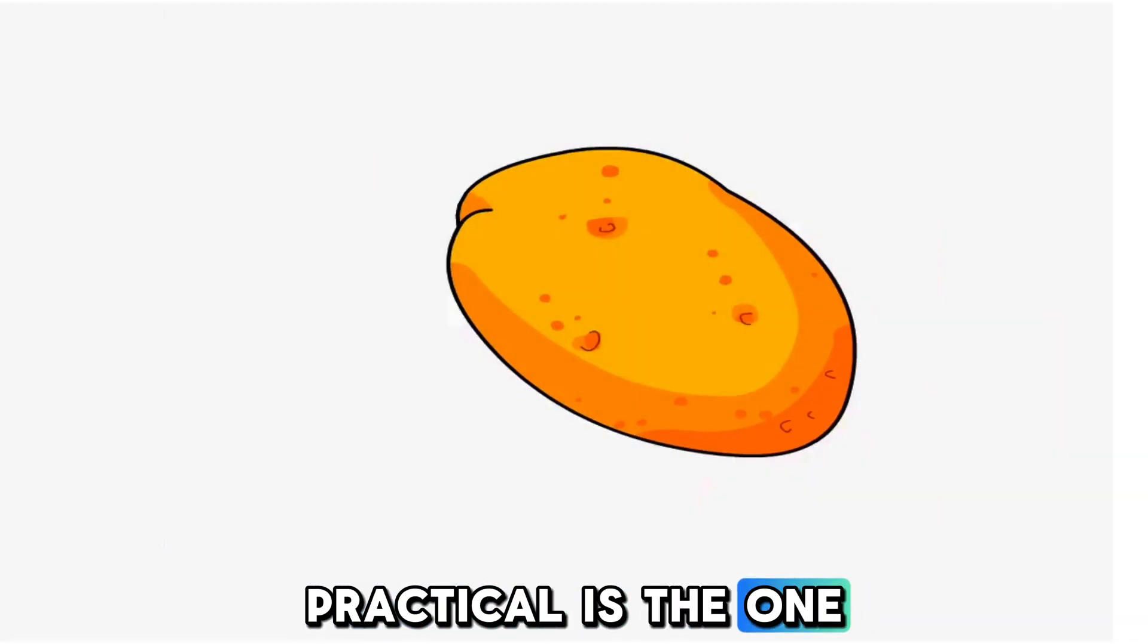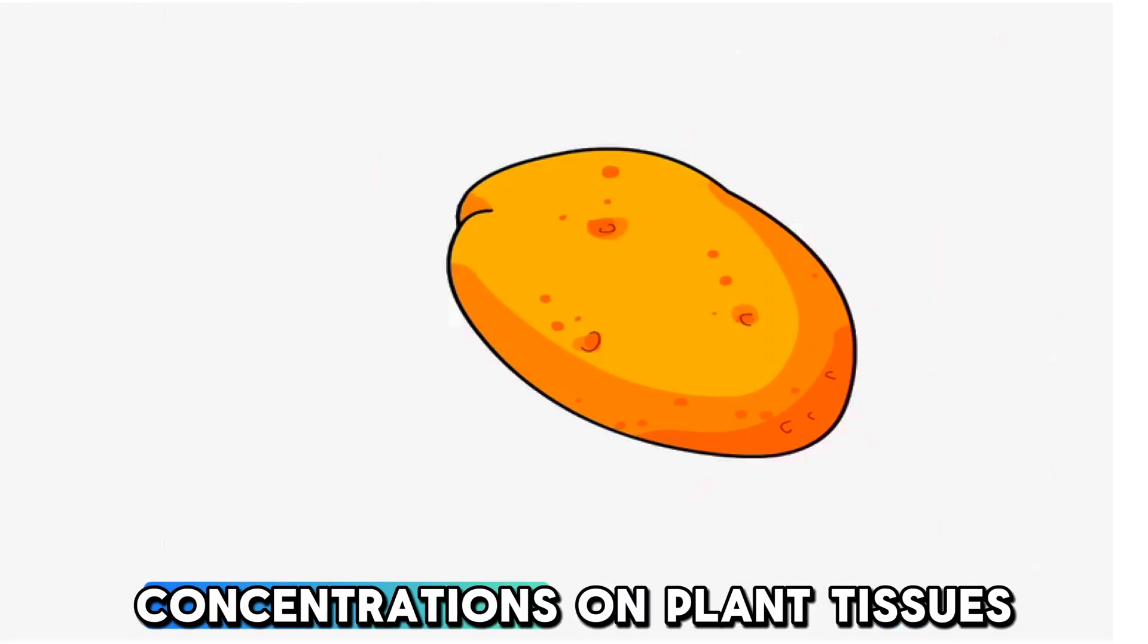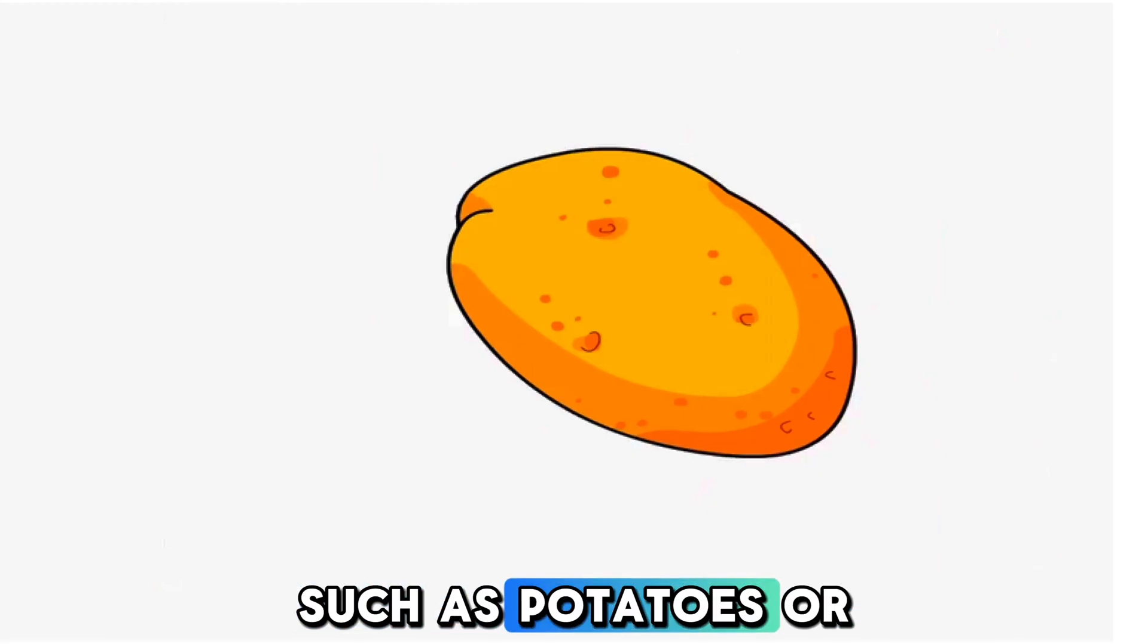One of the important practicals is the one involving the effect of concentrations on plant tissues such as potatoes or onions.